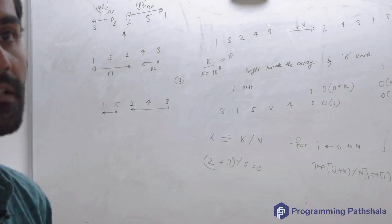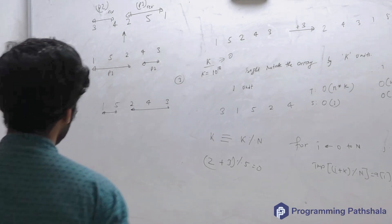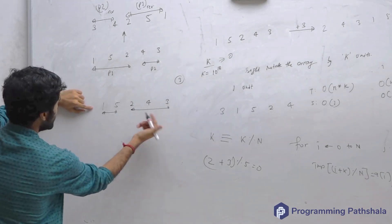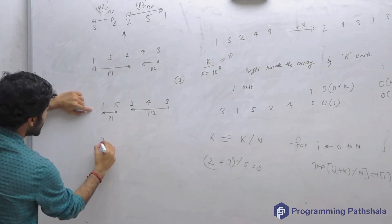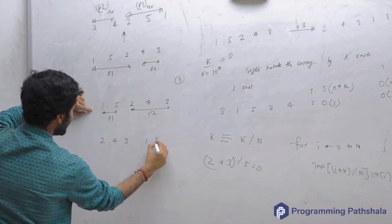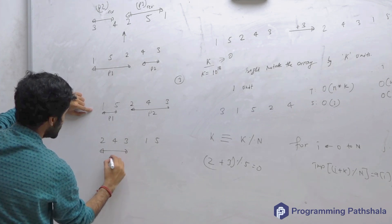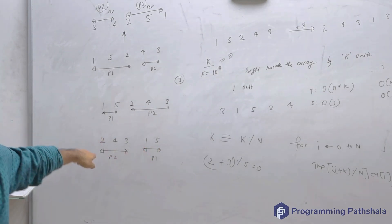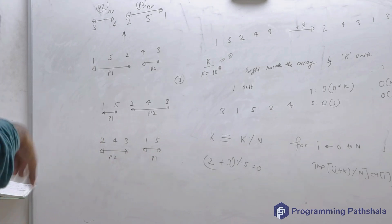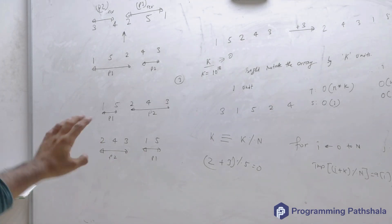When you perform the right rotation, what is it that you get? If I call it p2 and I call it p1, you get 2, 4, 3, 1, 5. So you get p2 and p1 intact. As a consequence of right rotation, this is what you get, right? But if you reverse the array, then you are getting that.